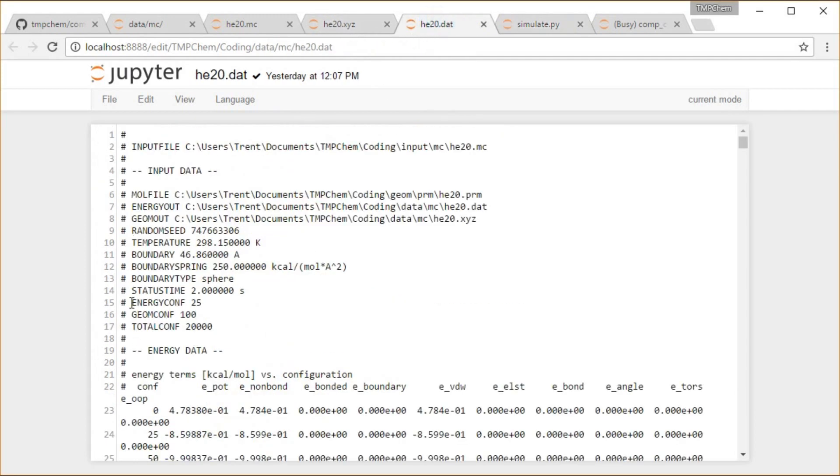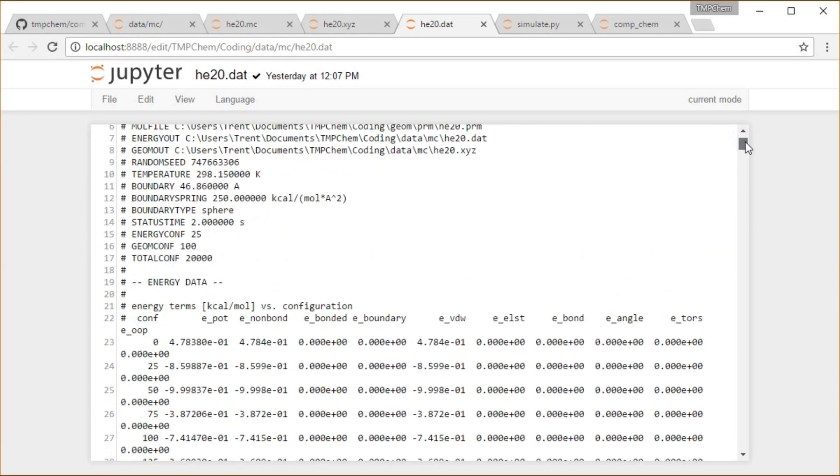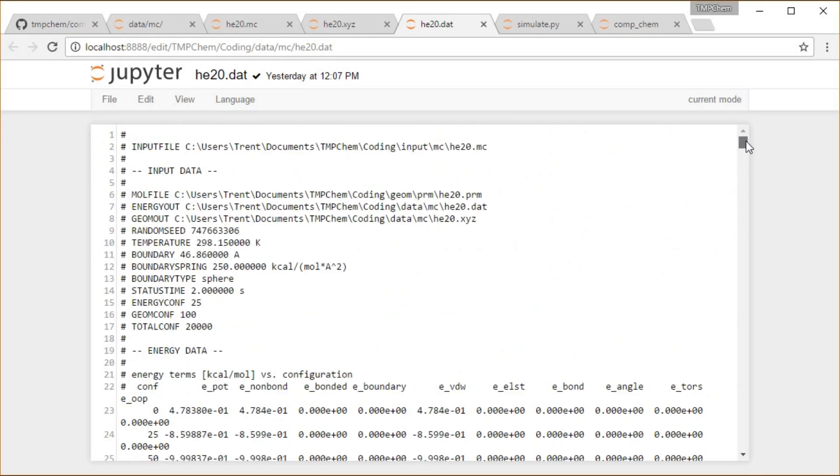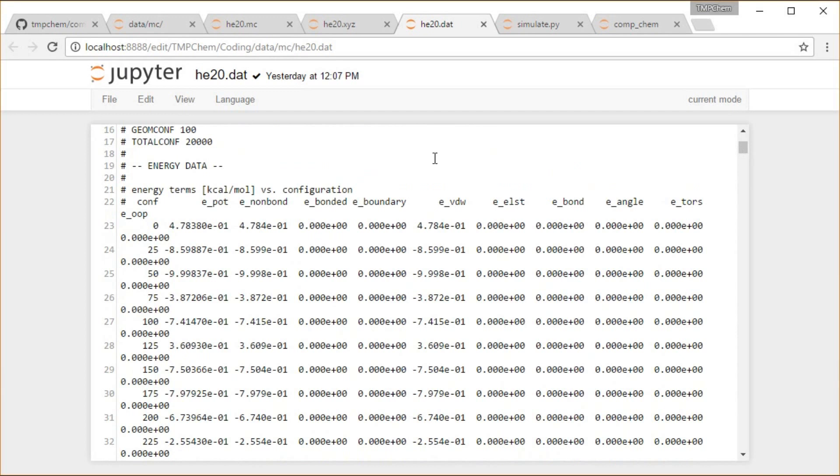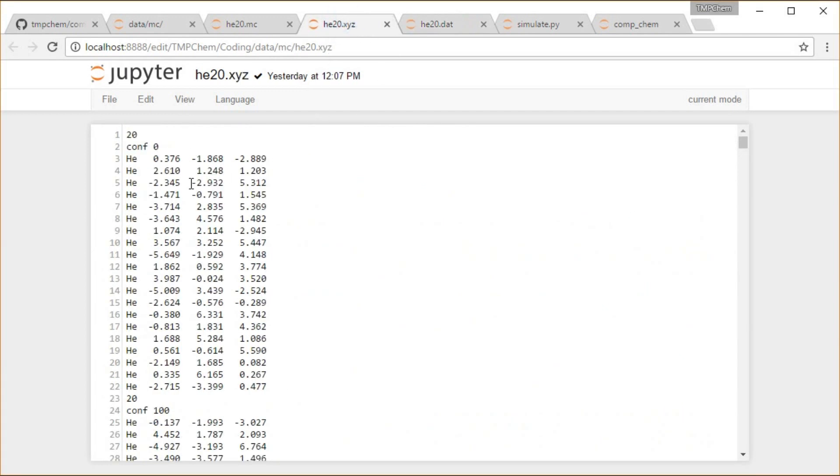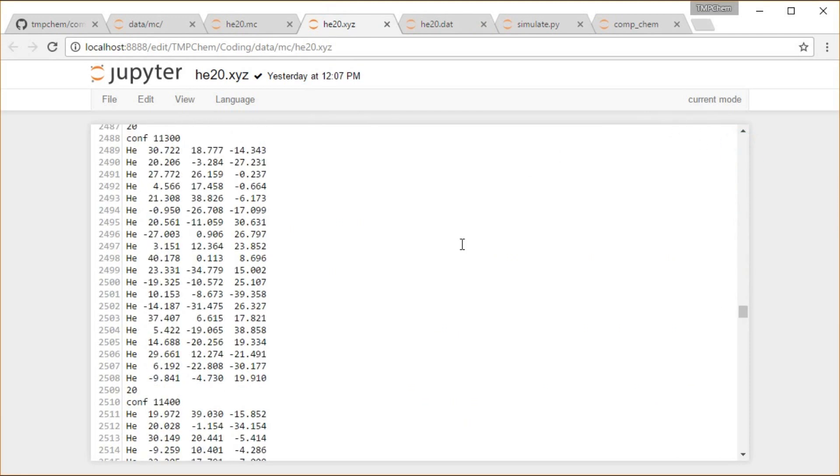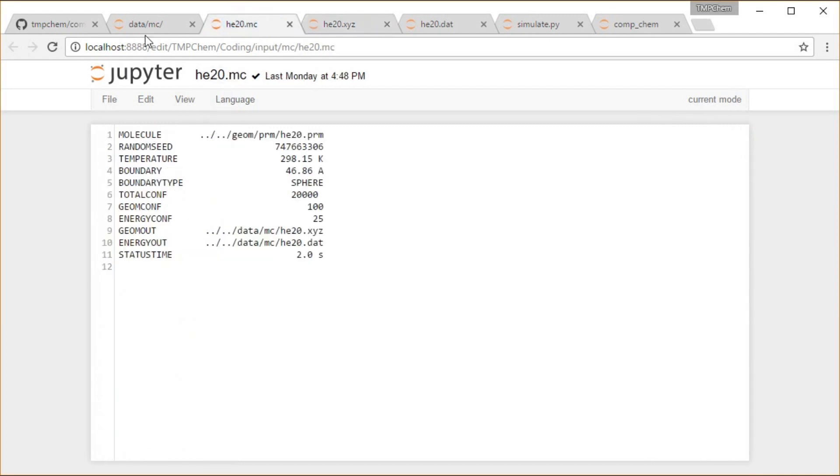The output for that, the energies - similar file as the molecular dynamics structure - input parameters repeated again. We have all the energy components that get output there. Then the structures, configuration 0, 100, etc. XYZ files, one after another, all the way to the end. That was our input file again.